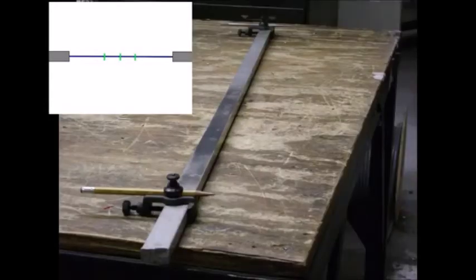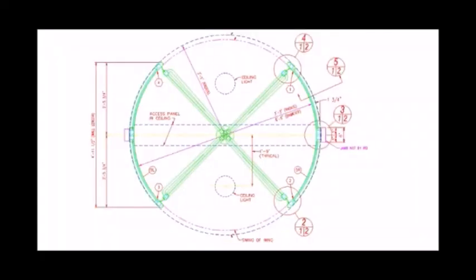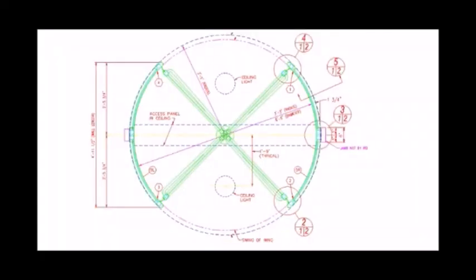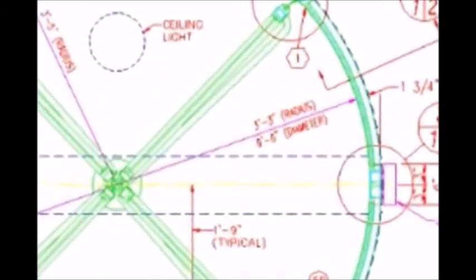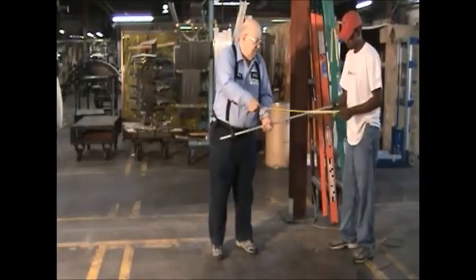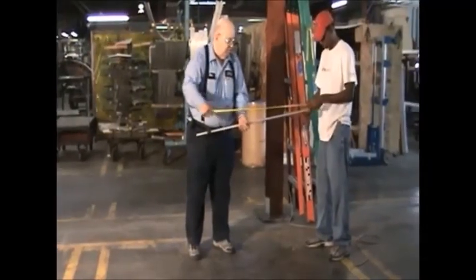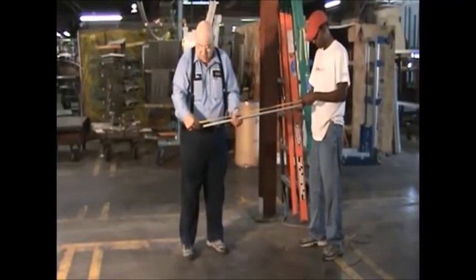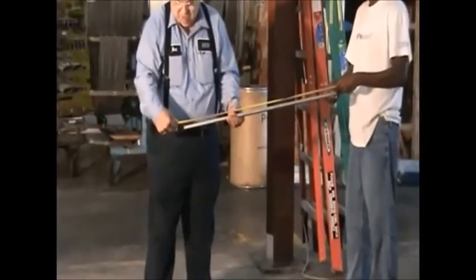The compass is made from a set of trammel points and a piece of aluminum bar stock. Determine the inside radius of the door from the blueprints. For this door, the inside radius is 39 inches and we have set the trammel points of the compass accordingly. Your door's radius may be different. Again, check the blueprint.